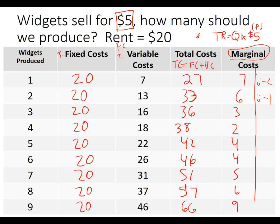The fourth widget costs $2; I sell for $5 — that's plus $3. I'm already up. The fifth widget costs $4; I sell for $5 — I'm going to do this one. The sixth widget costs $5; I sell for $5 — I'll go ahead and do this one, breaking even on the margin. For tax purposes I might back off on this one. So zero, plus one, plus one at the margin.